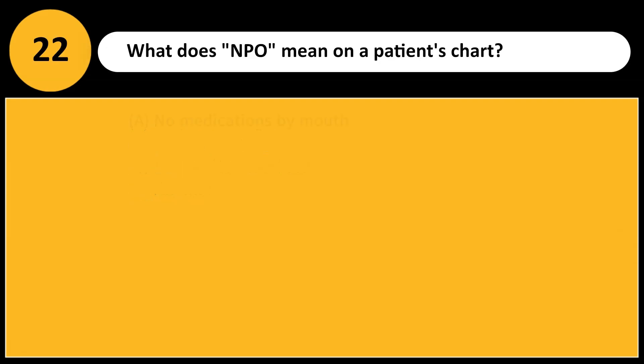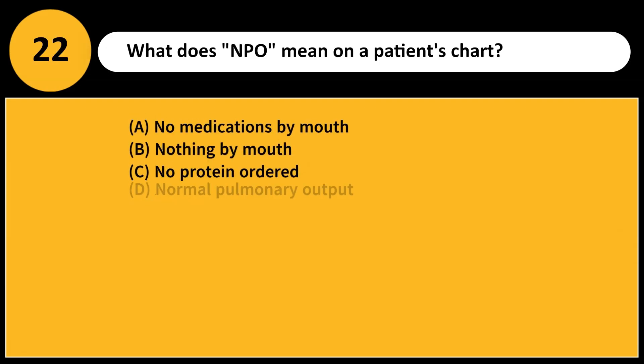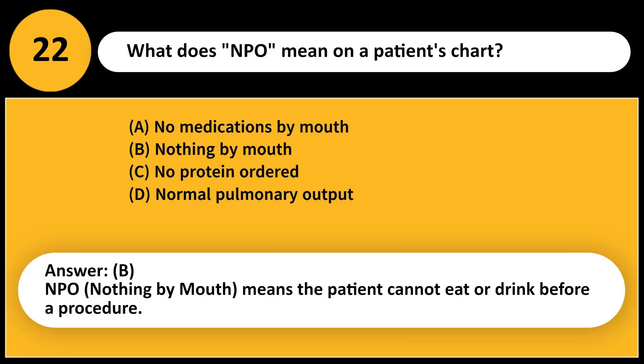What does NPO mean on a patient's chart? A. No medications by mouth B. Nothing by mouth C. No protein ordered D. Normal pulmonary output. Answer: B. NPO — nothing by mouth — means the patient cannot eat or drink before a procedure.